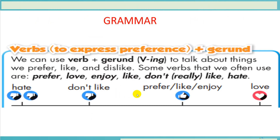So today we study grammar about verbs to express preference. We can use verb plus gerund or verb plus -ing to talk about things we prefer — like and dislike. Some verbs that we often use are: prefer, love, enjoy, like, don't really like, hate.